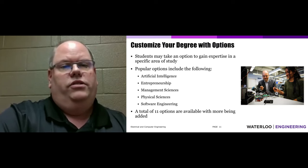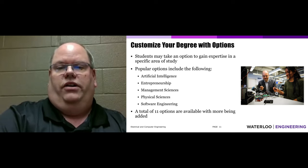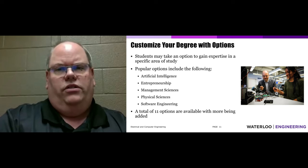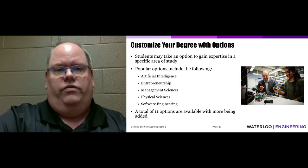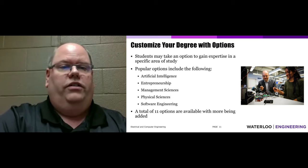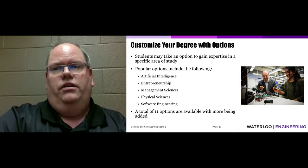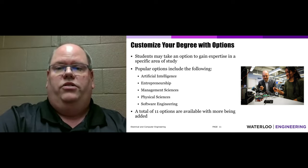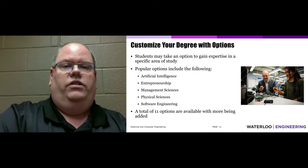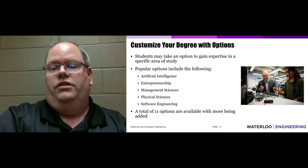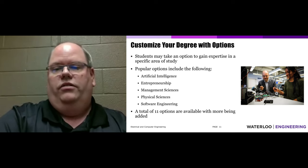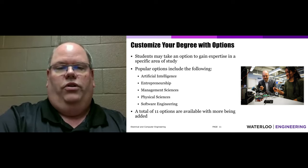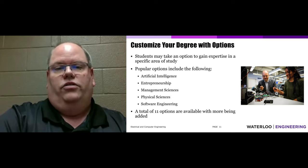Students may customize their degree with options to gain expertise in a specific area — something relatively unique to the University of Waterloo and the Faculty of Engineering. Our most popular options are artificial intelligence, a very hot topic, and entrepreneurship. Many students come with ideas for a business they want to found, and we've had many very successful entrepreneurs. In fact, the University of Waterloo has had more students found unicorn companies — valued over a billion dollars — than any other university in Canada.